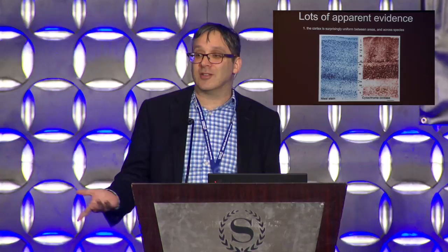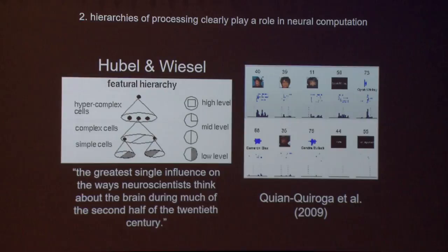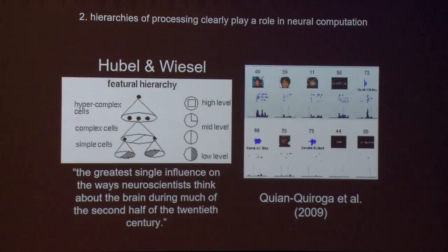Another reason why you might be looking for this one canonical circuit is that hierarchies of processing clearly play a role in neural computation. Nobody could say there's no hierarchical processing in the brain — that would be absurd. We know that from Hubel and Wiesel, which somebody said was the greatest single influence on the way neuroscientists think about the brain during the second half of the 20th century. We have Oprah Winfrey neurons that are high in some hierarchy and respond cross-modally, presumably via some hierarchy.